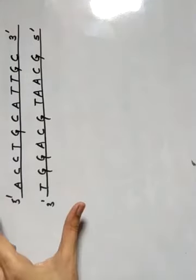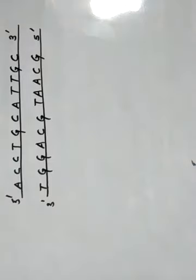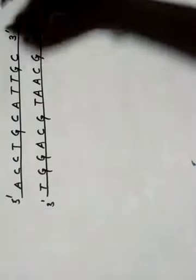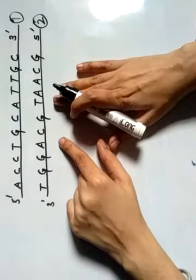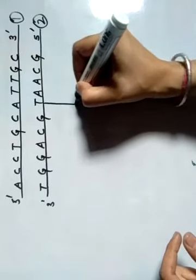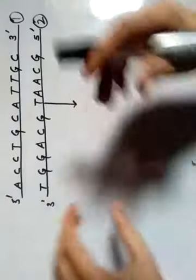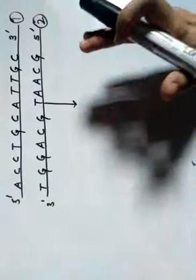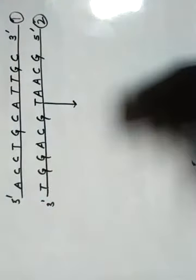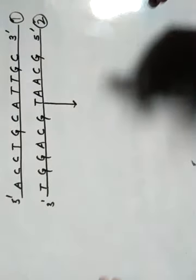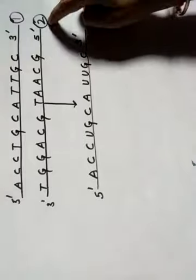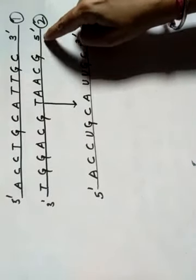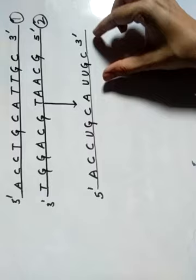Let's take a double-stranded DNA for example. Now just imagine this is our strand number one and this is our strand number two. Your strand number one will undergo transcription. RNA polymerase will come and it will bind to your strand number two and it will begin to transcribe strand number two. After transcription, an mRNA molecule will form. RNA polymerase will come and bind to your strand number two at the five prime end and it will begin to transcribe your strand number two and it will form mRNA.